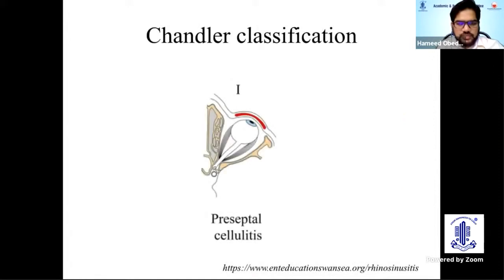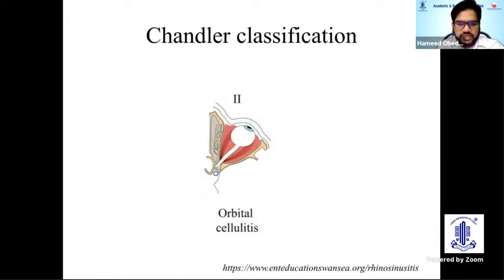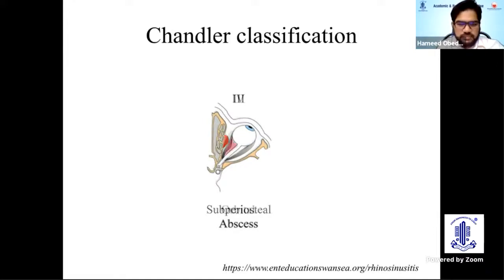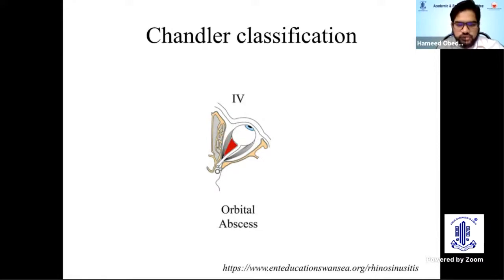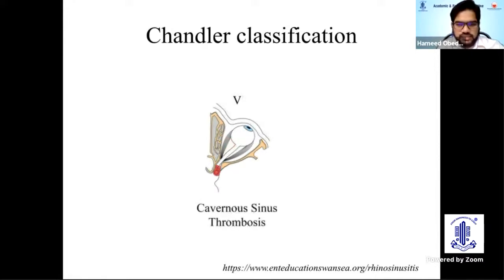Chandler classified orbital cellulitis into: preseptal cellulitis, then orbital cellulitis, Stage 3 — subperiosteal abscess where there is a collection of pus between the bones and the periosteum, Stage 4 — orbital abscess where pus is within the substance of the orbital tissue, and lastly, cavernous sinus thrombosis.